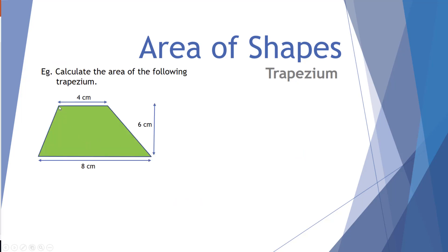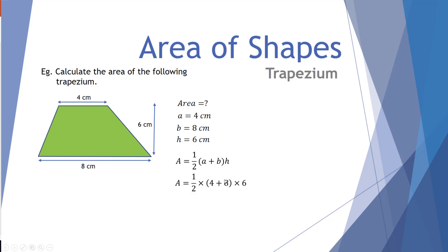Here's one that's not symmetrical — the top parallel line of 4 centimeters is dragged closer to one side. But the equation still holds true. Area equals question mark. The short parallel line (a) is 4, the long parallel line (b) is 8, and the height is 6. Using our equation: (a + b) divided by 2, times h. Four plus eight is 12; half of 12 is 6; 6 times 6 gives an area of 36 centimeters squared.